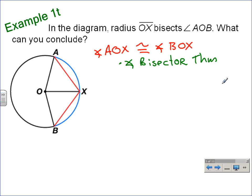Now that we have this established, that angle AOX is congruent to angle BOX, we can conclude that chord AX and chord BX are congruent, and that would be because of theorem 12.4 part one.